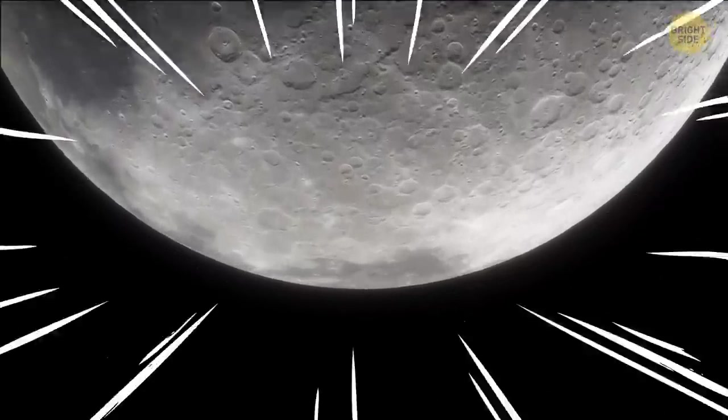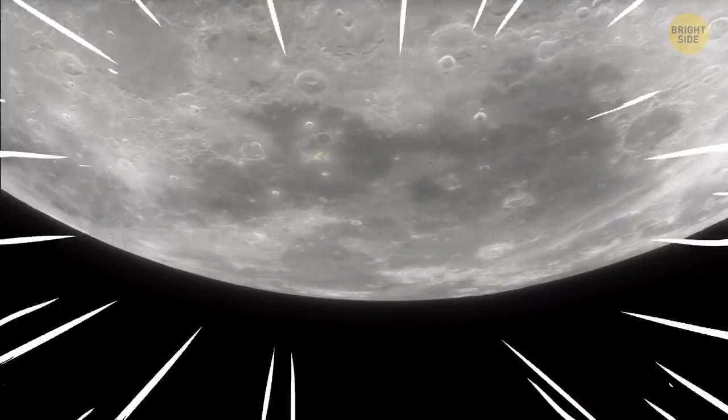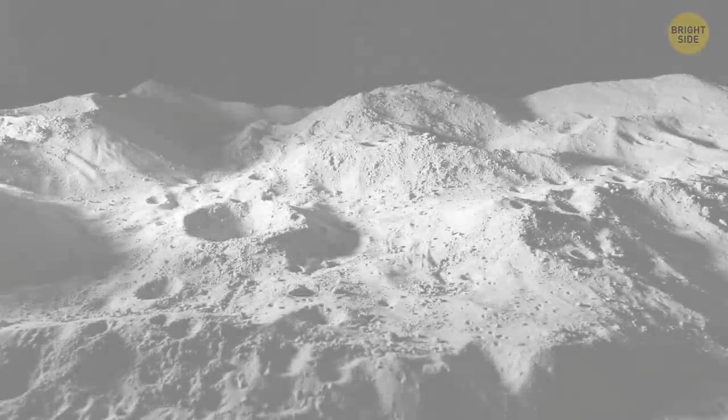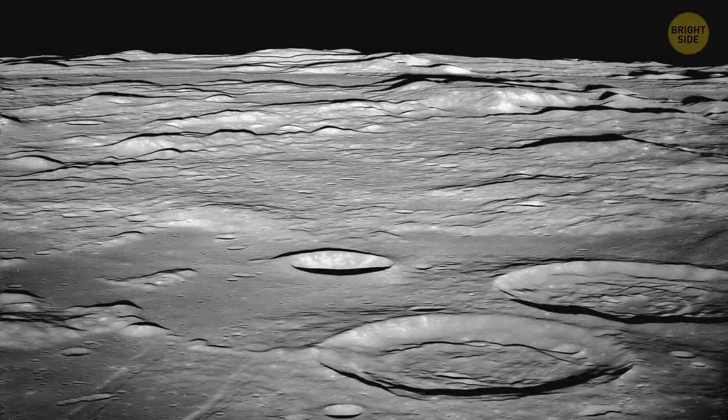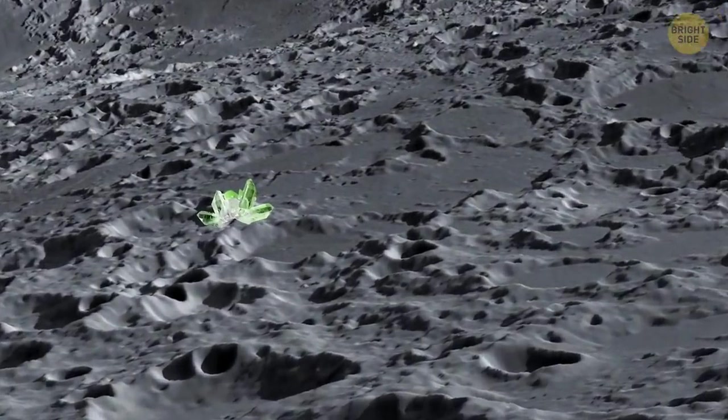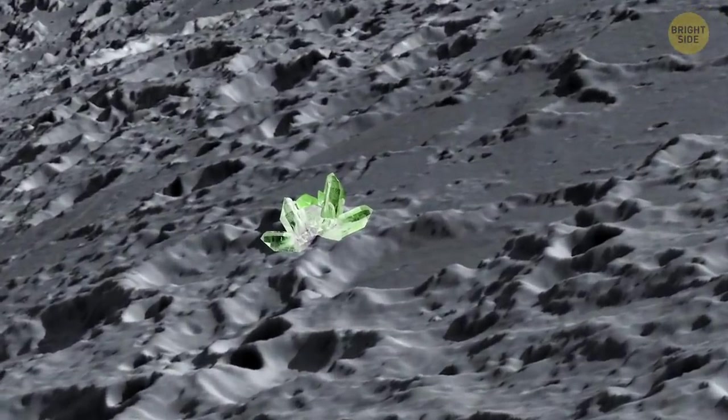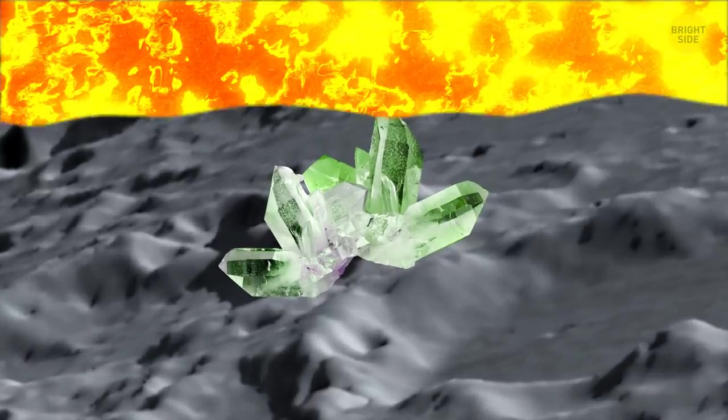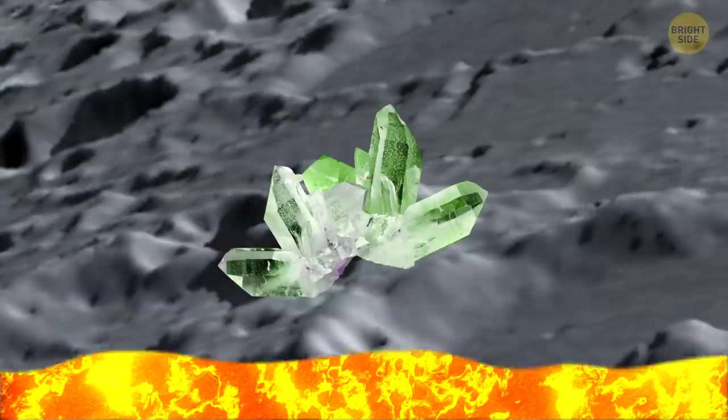A strange substance has been discovered on the far side of the Moon. Researchers found images of the objects in pictures received from the lunar rover taken near a crater. The image shows unusual stones that look like dark green crystals. The substance may be glass that appeared as a result of volcanic eruptions a long time ago. But no one can say for sure.